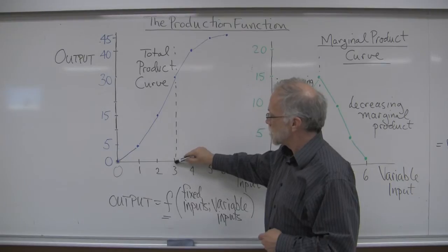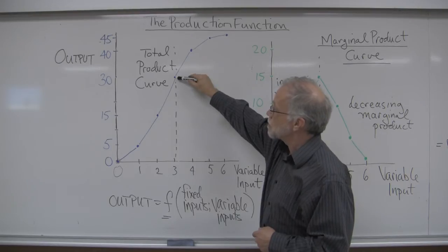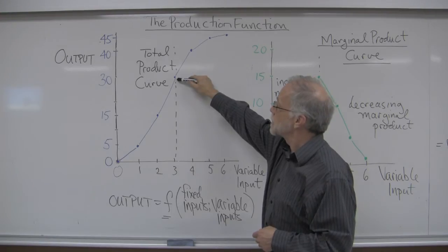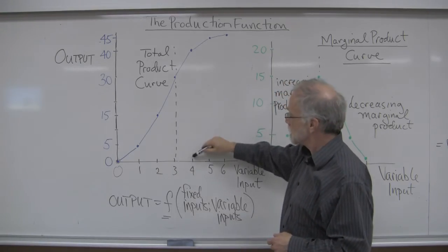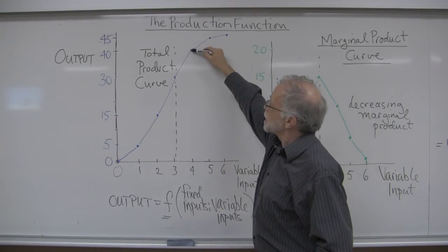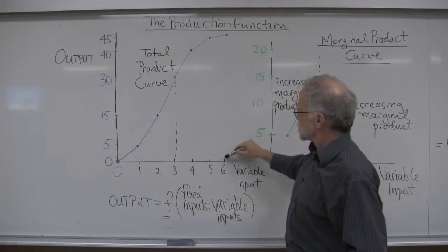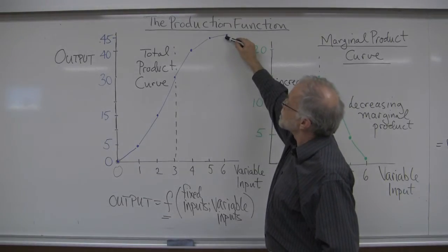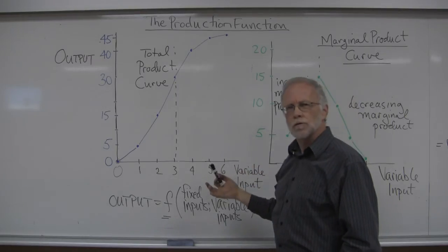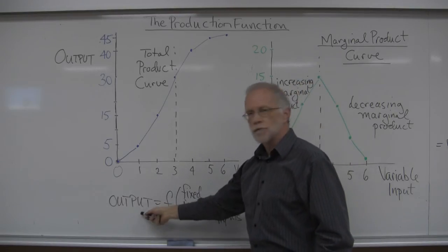If we add a third person to this production process, our total output would be 30 units. We could continue and ask: what if we use a fourth person? This says the output is going to be 40. A fifth person raises output to 45. A sixth person adds maybe just one unit of output. So there's a story being told here about the relationship between the inputs we're varying and the amount of output we're getting.